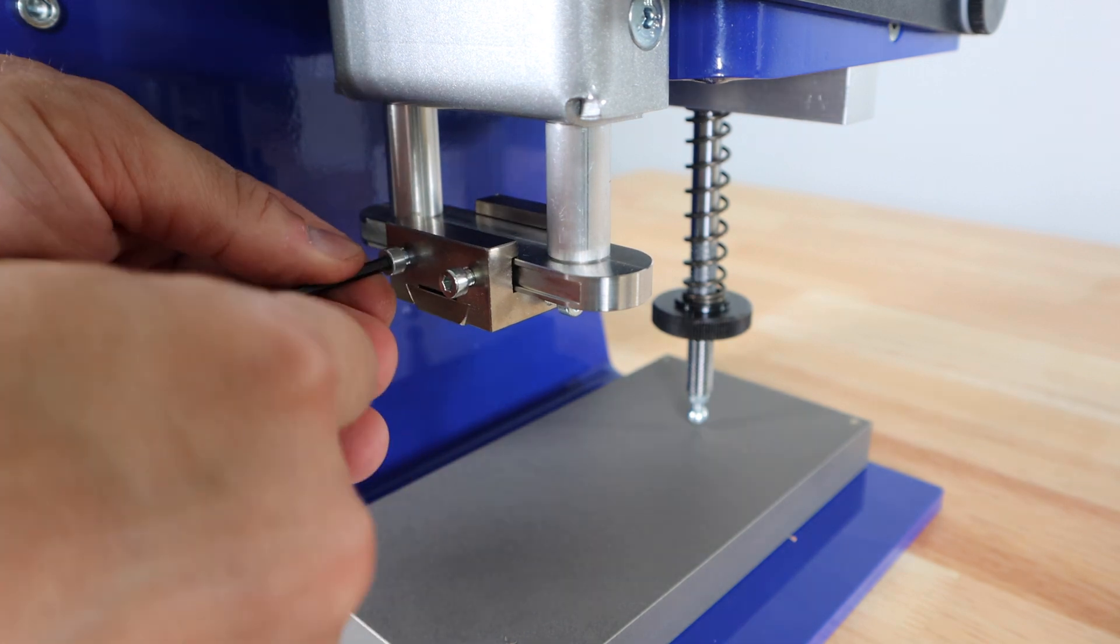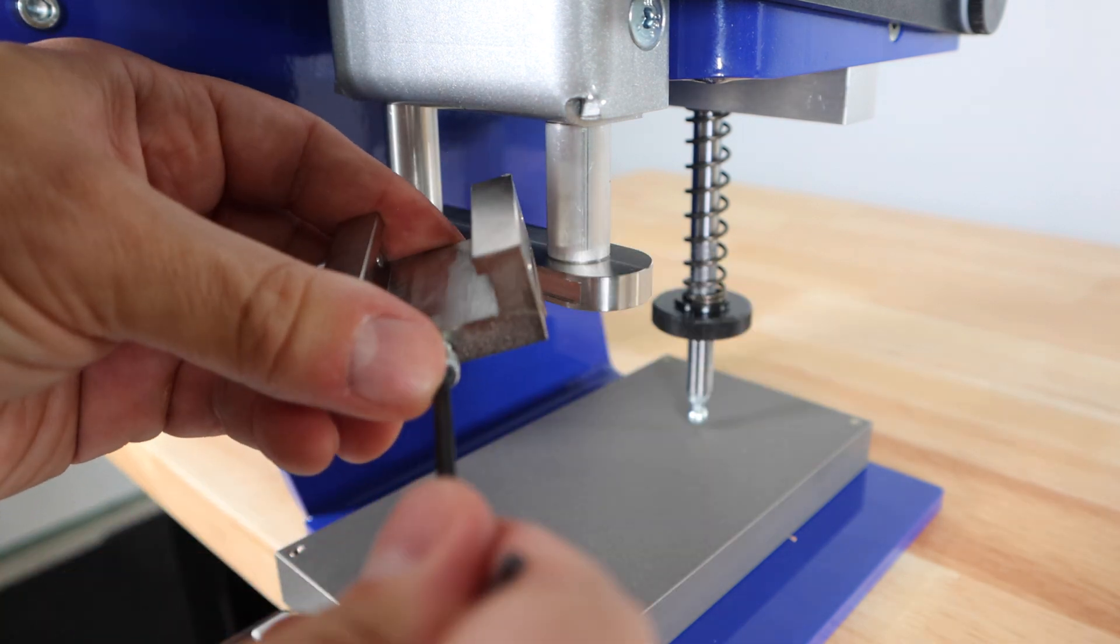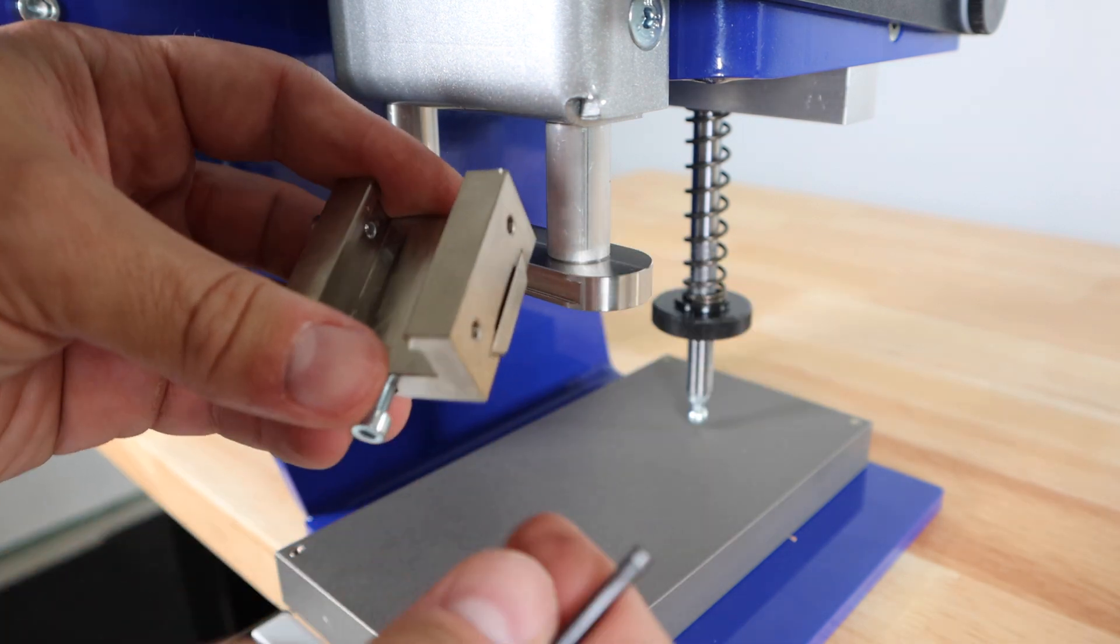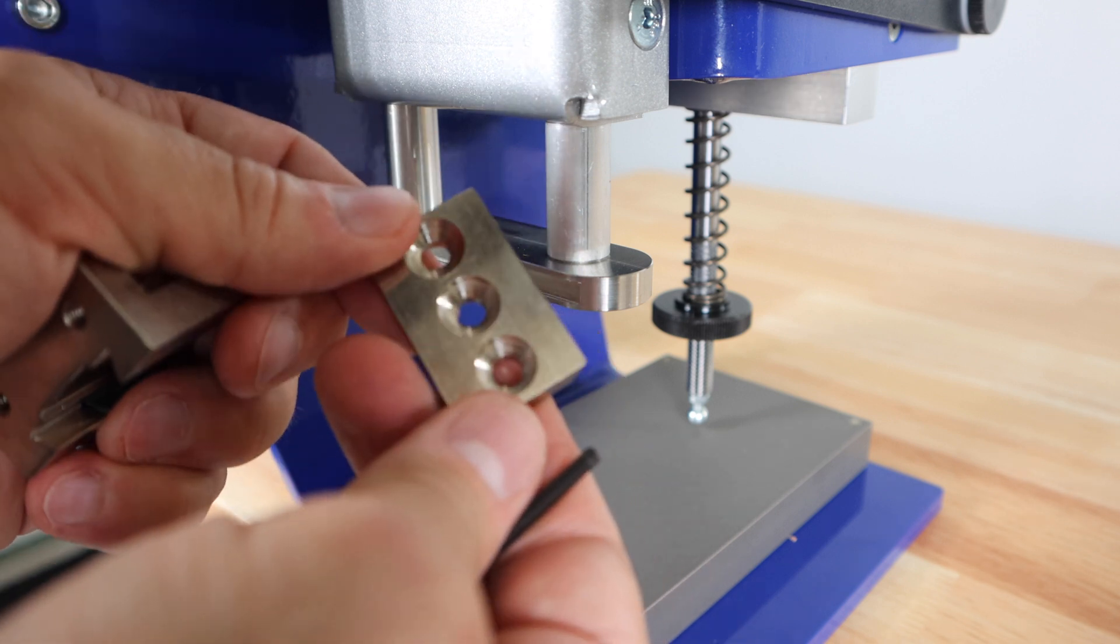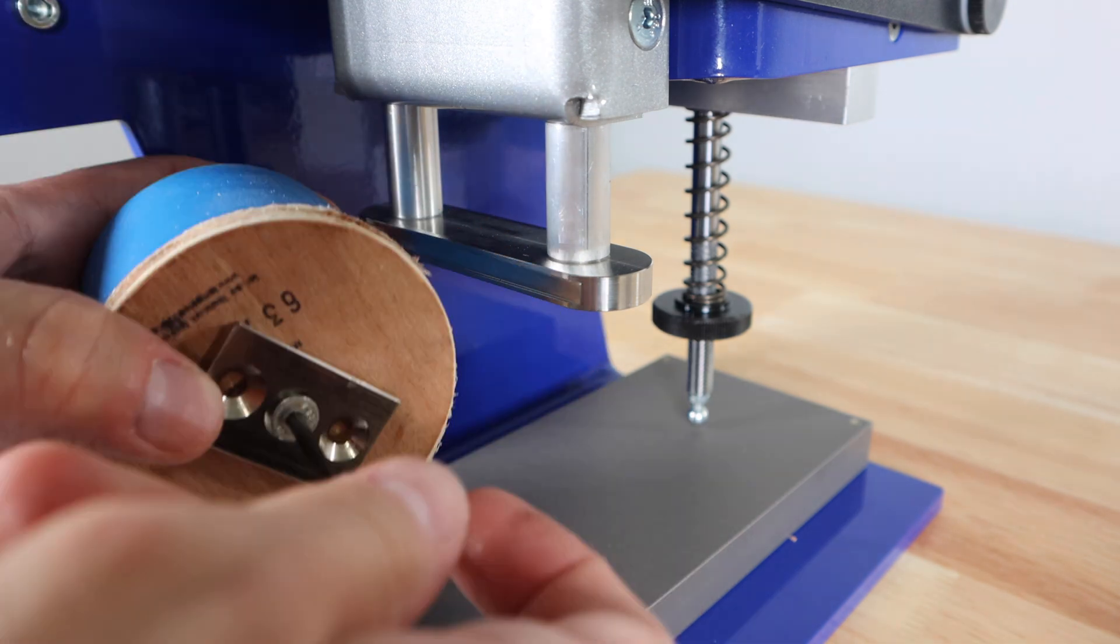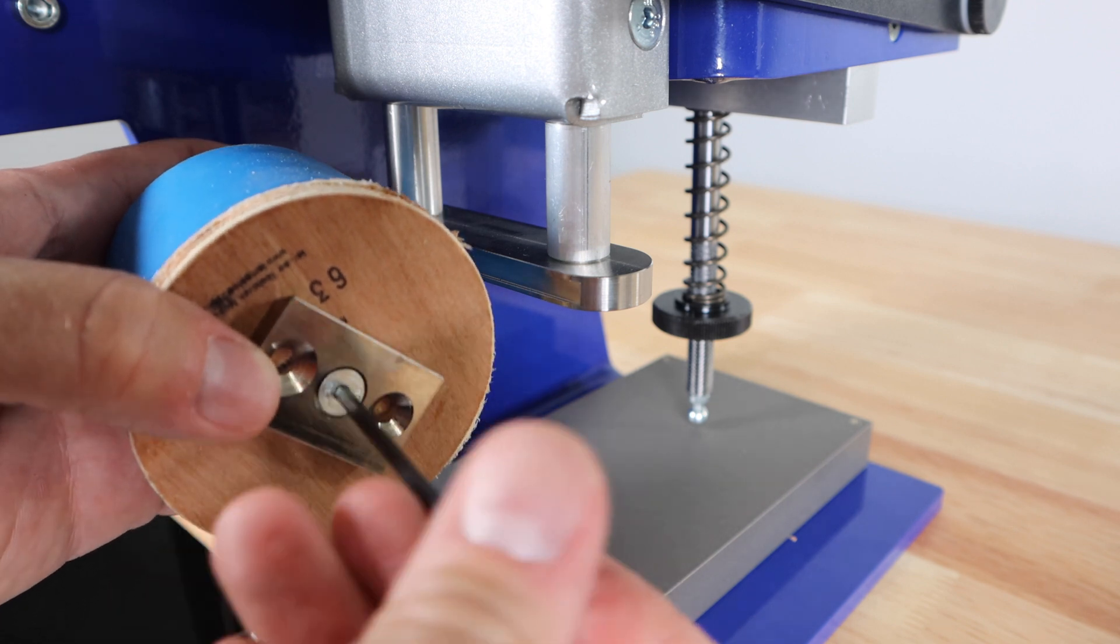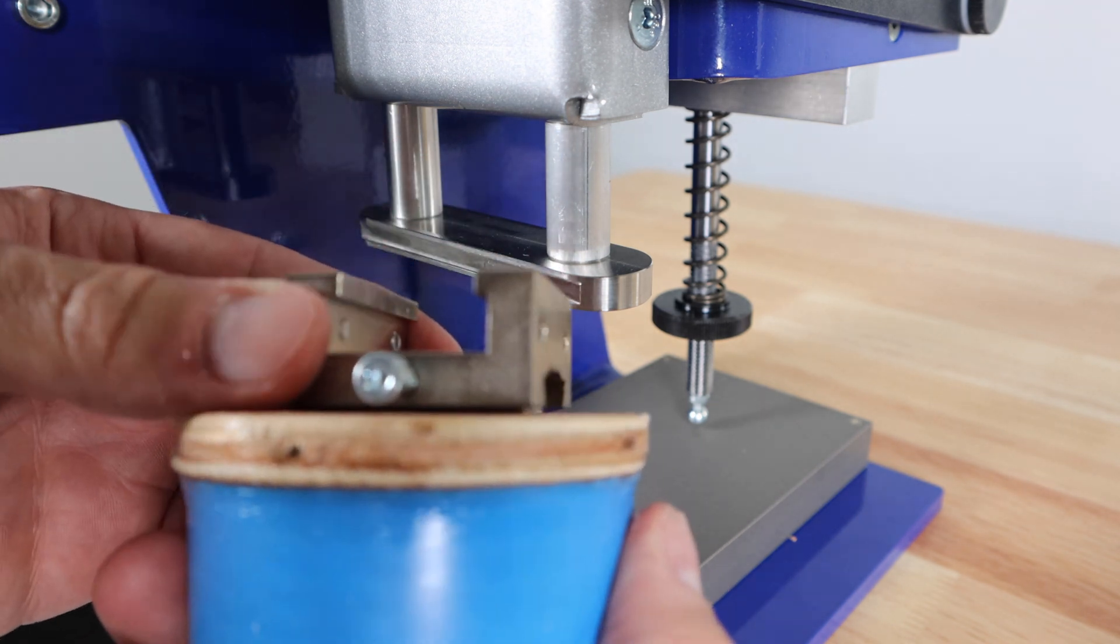Next loosen the pad holder. Take apart the pad holder insert and attach the pad. Reassemble the pad holder and place it back onto the machine.